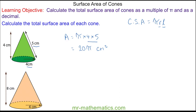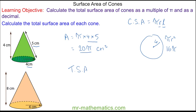With this cone we also have to consider the base. The base is a circle of radius four centimeters, and to work out the area of a circle we use pi r squared. The radius is four, so we have four squared which is sixteen pi. So the total surface area is the sum of the curved and the base, which is 36 pi centimeters squared. We can approximate this as a decimal as 113 centimeters squared to three significant figures.